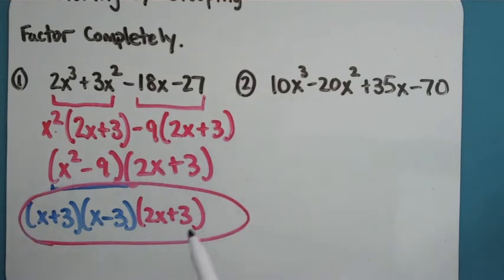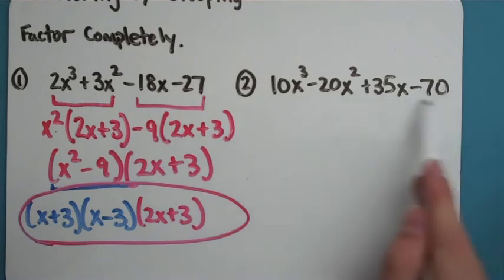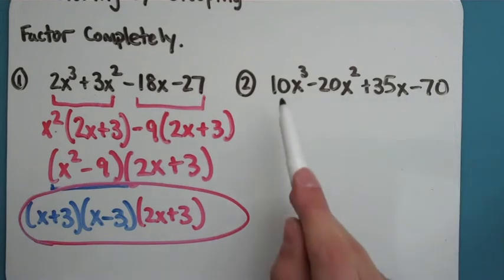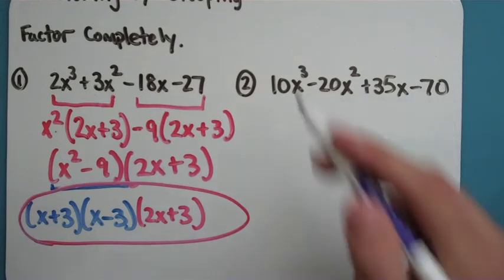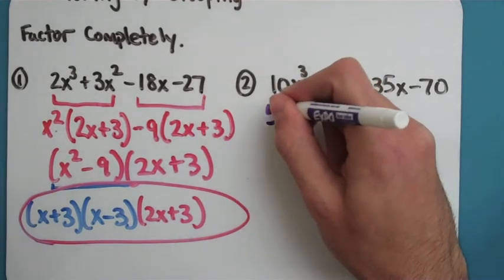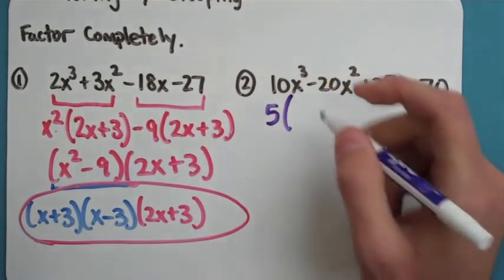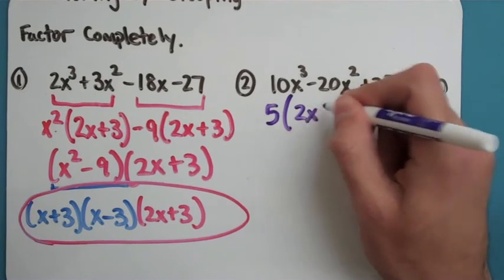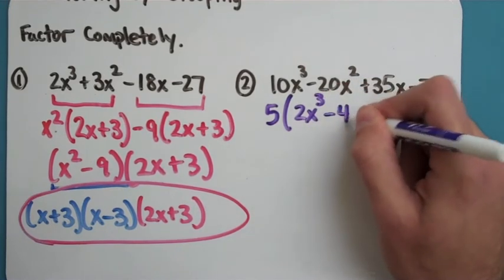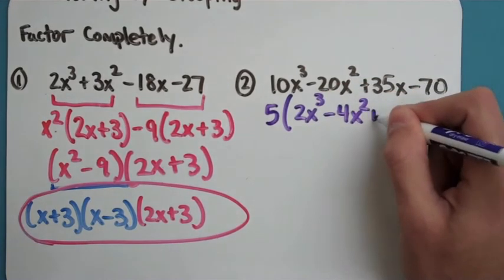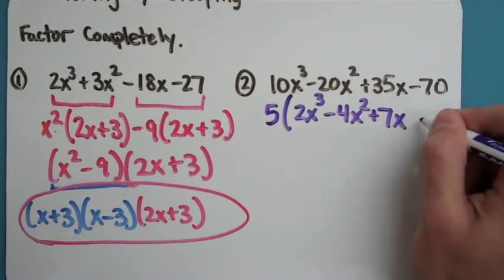Again, always look for that GCF first. And this one actually does have a GCF. No variables that we can take out because there's nothing on the 70 there, but it looks like 5 goes into everything. Take out that 5 now, make the problem easier for yourself. So you get 2x to the third minus 4x squared plus 7x and then it'll be minus 14.